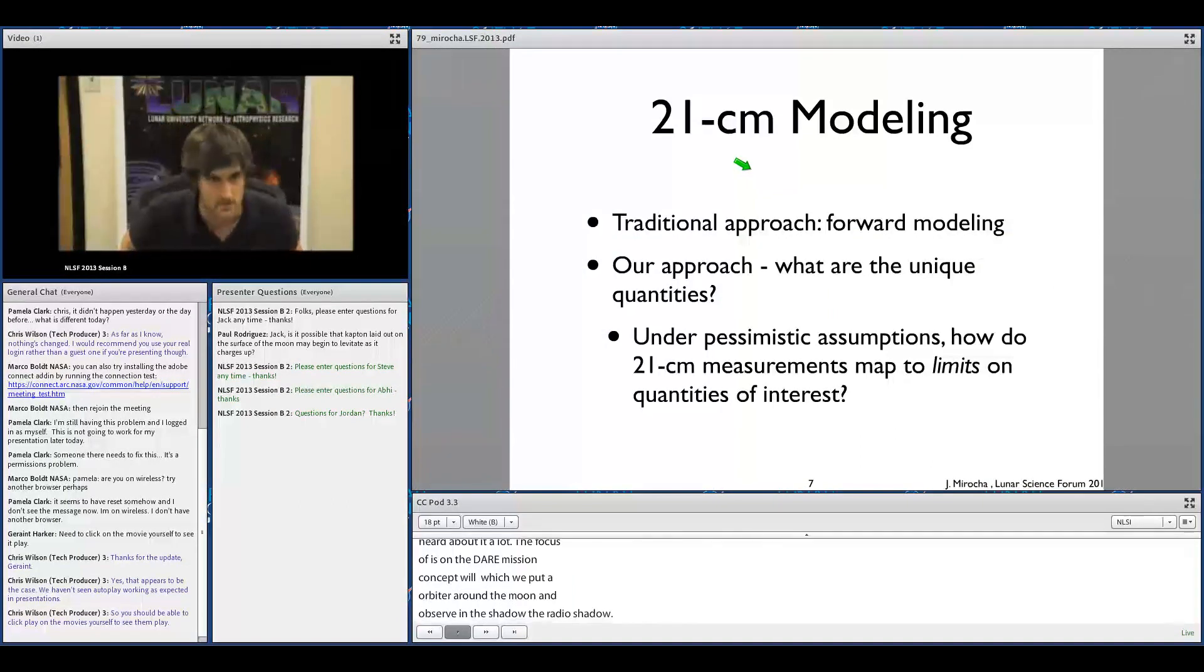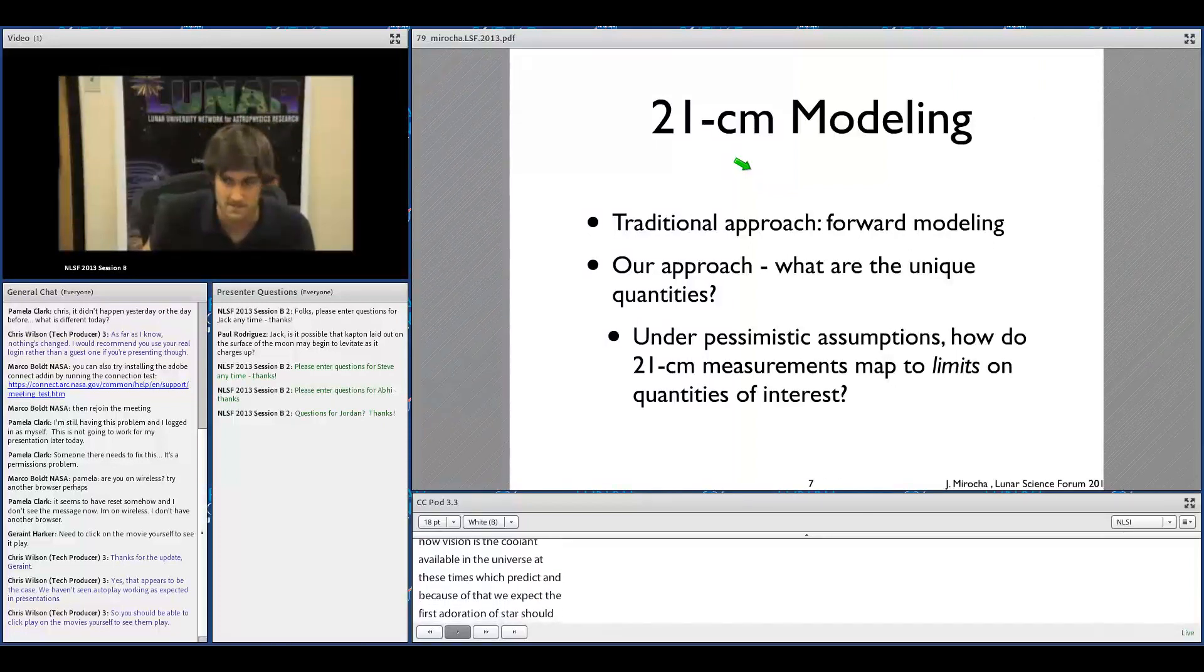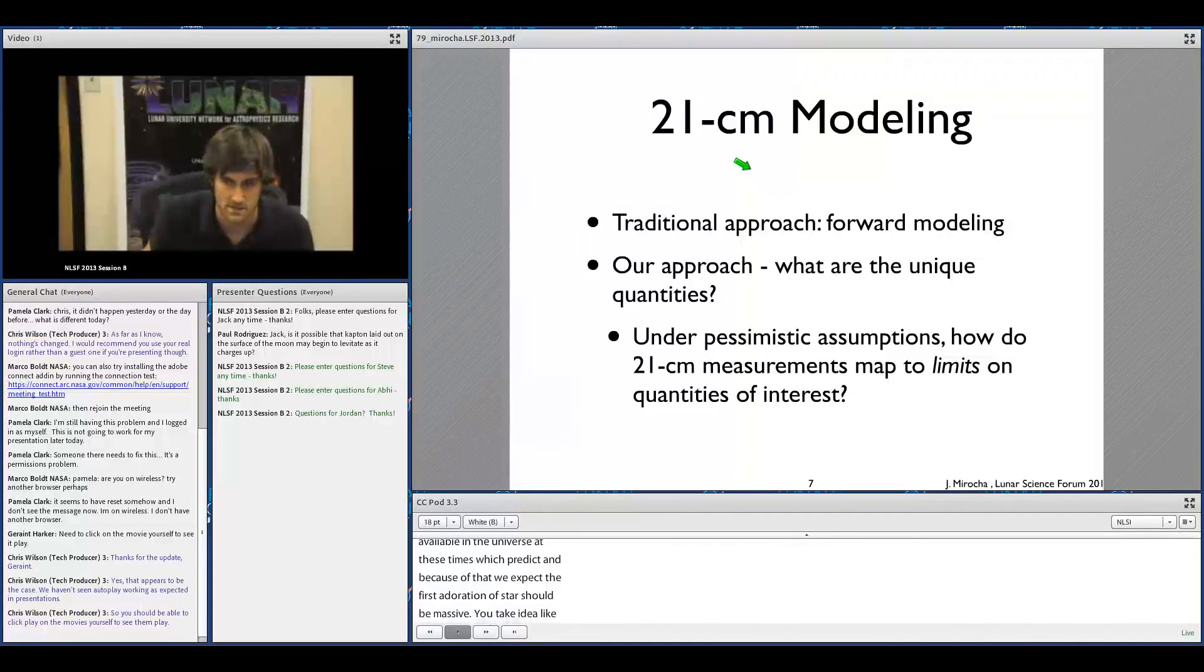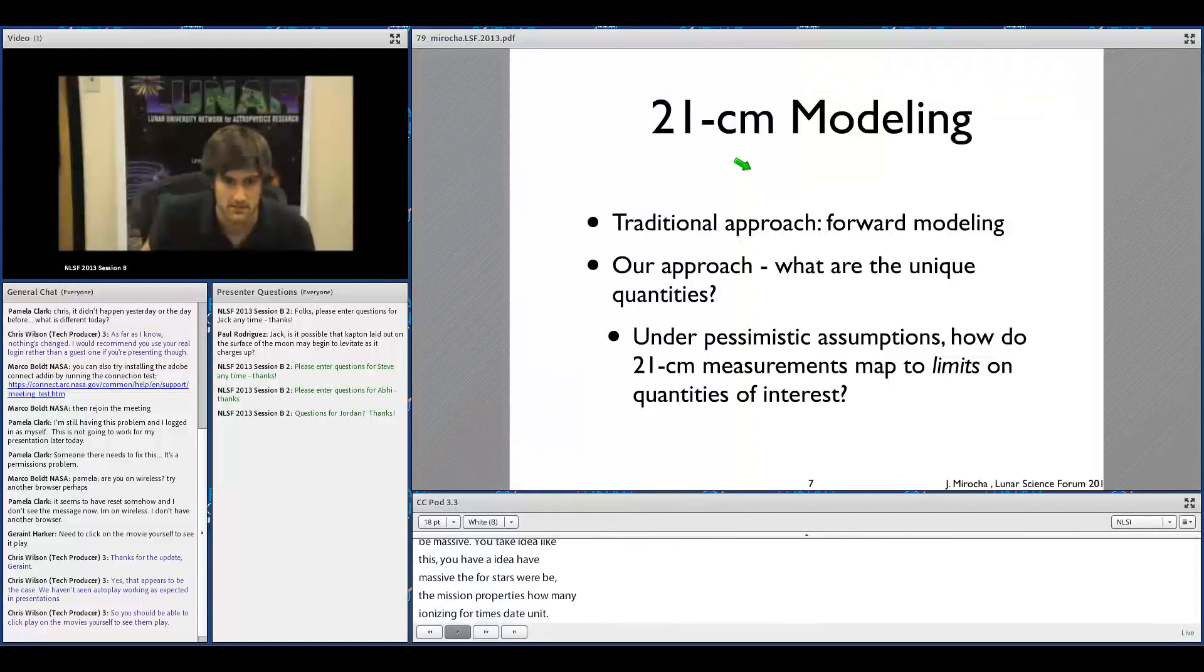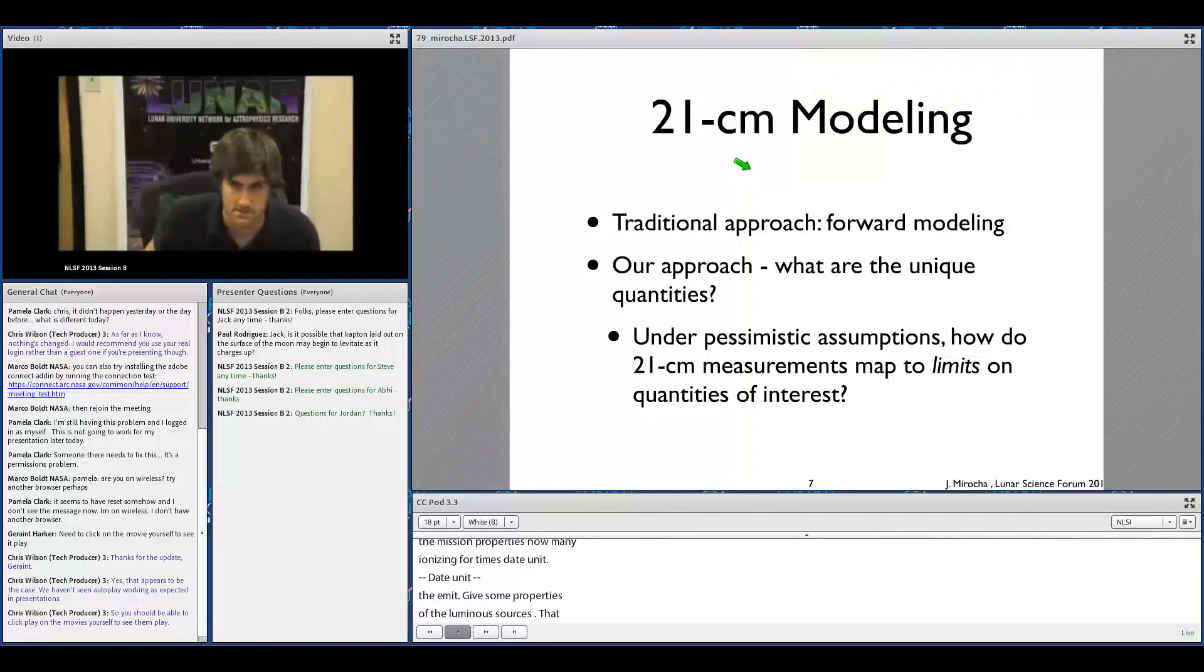So 21-centimeter modeling - the traditional approach has been to do what I'm calling forward modeling, which is we have simple theoretical arguments for how the first stars should form. Steve talked about this a bit. Molecular hydrogen is really the only coolant available in the universe at these times, and because of that we expect the first generation of stars should be very massive. So you take an idea like this, you have an idea of how massive the first stars might be, what are their emission properties - how many ionizing photons do they emit. You couple those ideas to a chemistry solver that tells you what the temperature and ionization state of the intergalactic medium should be, given some properties of the luminous sources.